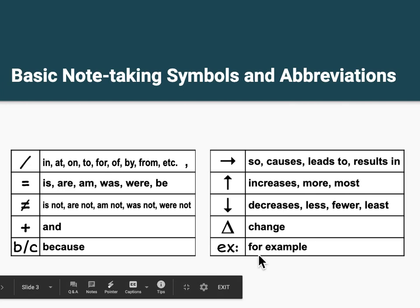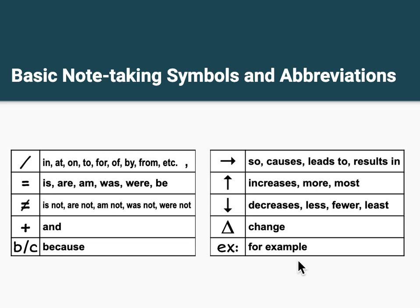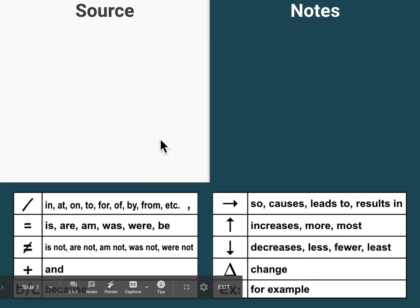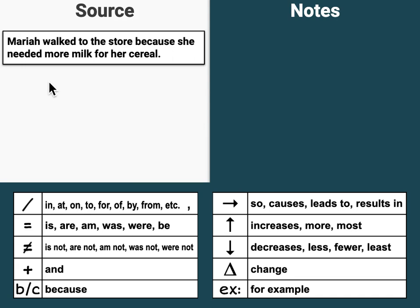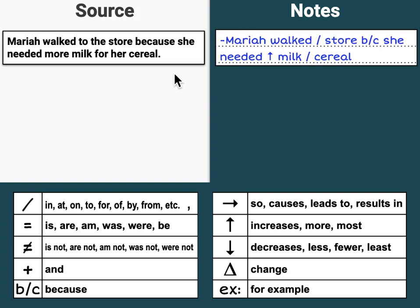So these are some standard basic symbols and abbreviations we can use. Let's look at some examples. Here we have the source material and on this side we have notes — that information in note form. So here we have: 'Mariah walked to the store because she needed more milk for her cereal.' In note form, it may look like this: 'Mariah walked to store B/C' — because — 'she needed' — up arrow, meaning more — 'milk backslash for cereal.'